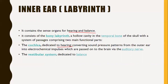The inner ear consists of the bony labyrinth. Hearing is mainly dependent on the cochlea, which converts sound pressure patterns from the outer ear into electrochemical impulses that are passed on to the brain via the auditory nerve. The inner ear is the important part of the ear that functions for hearing and balance, with the cochlea being the main hearing organ.